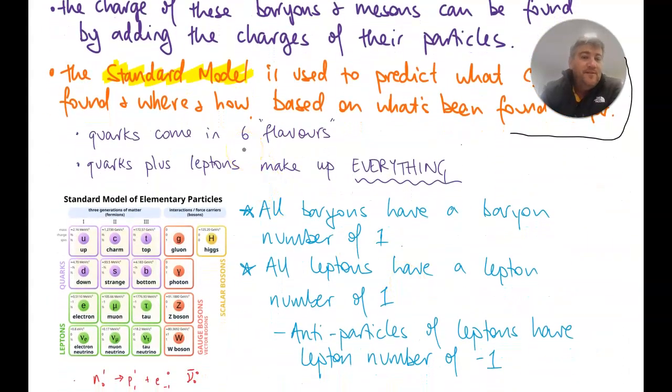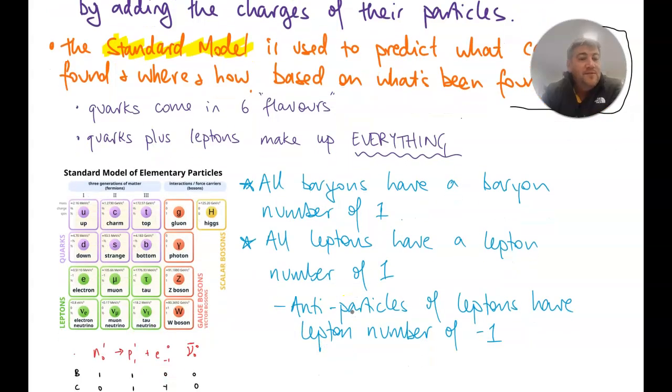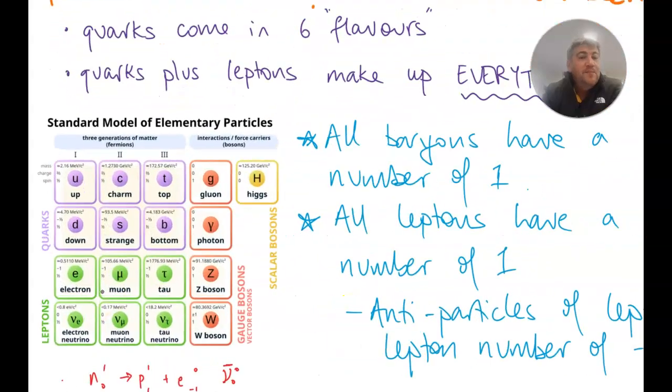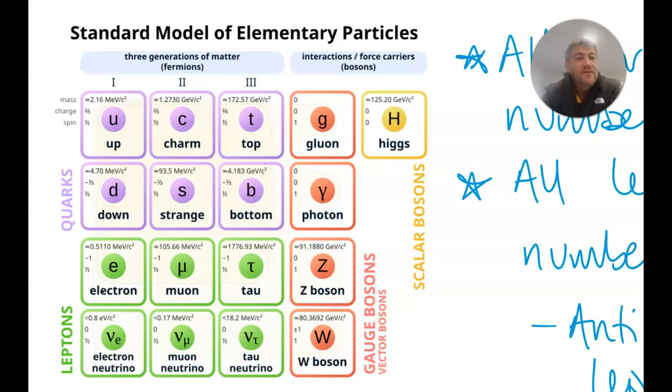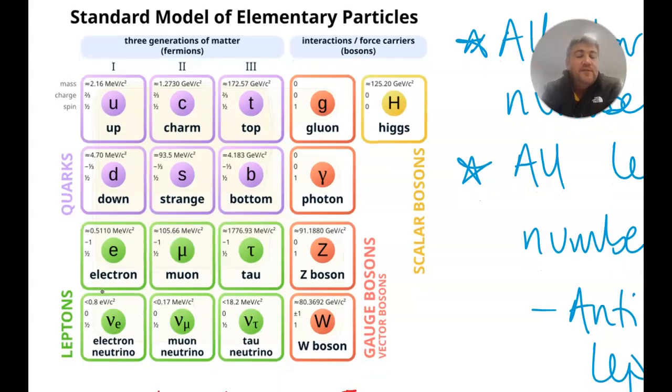The quarks come in flavours. So these six flavours are listed here below: up, down, charm, strange, top and bottom. And the quarks and the leptons with these weird flavours and whatnot, they are what make up absolutely everything. So if you've got a proton sliced into it, you would find quarks. If you've got a neutron sliced into it, you'd find quarks. You can't slice into an electron. It's its own fundamental particle to start with.